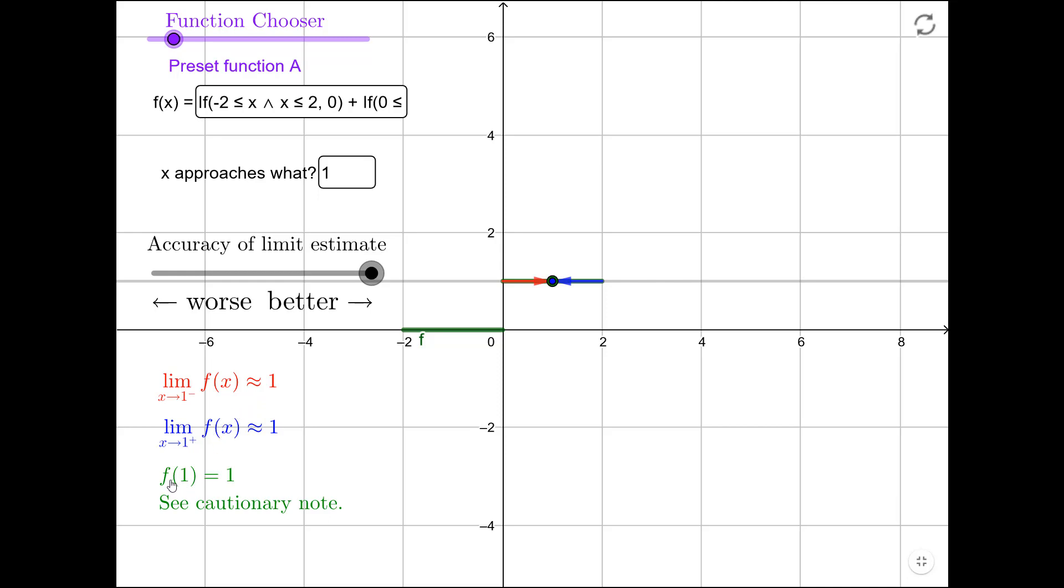Those two facts by themselves mean that the limit is 1. But when we throw in the fact that f(1) is also 1, three things are meeting there. We've got the left limit, the right limit, and the function value itself. When those three things all agree, that means that our function is continuous at that point. Whereas when we evaluated the same question when x equals 0, this function was discontinuous at 0.